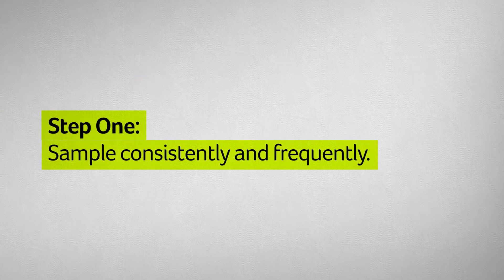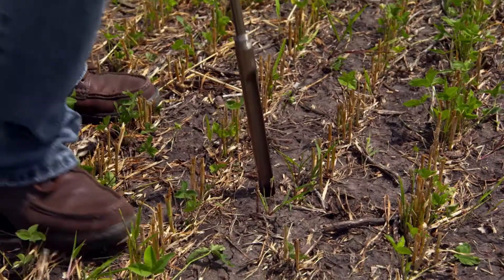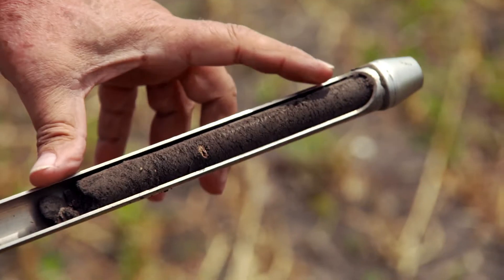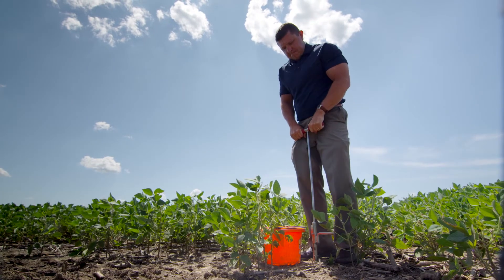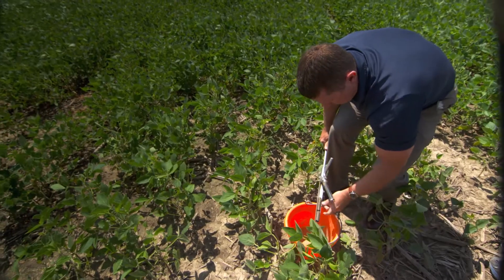Essentially all the nutrients vary with depth, so what is the best sampling depth? It's the depth that best represents the amount of nutrient available for the plant. Normally for most conditions in the Corn Belt that's about six inches. Some states recommend a six inch sample, some states recommend an eight inch sample — just be consistent about depth. If you're collecting six inch samples, always collect a six inch sample.